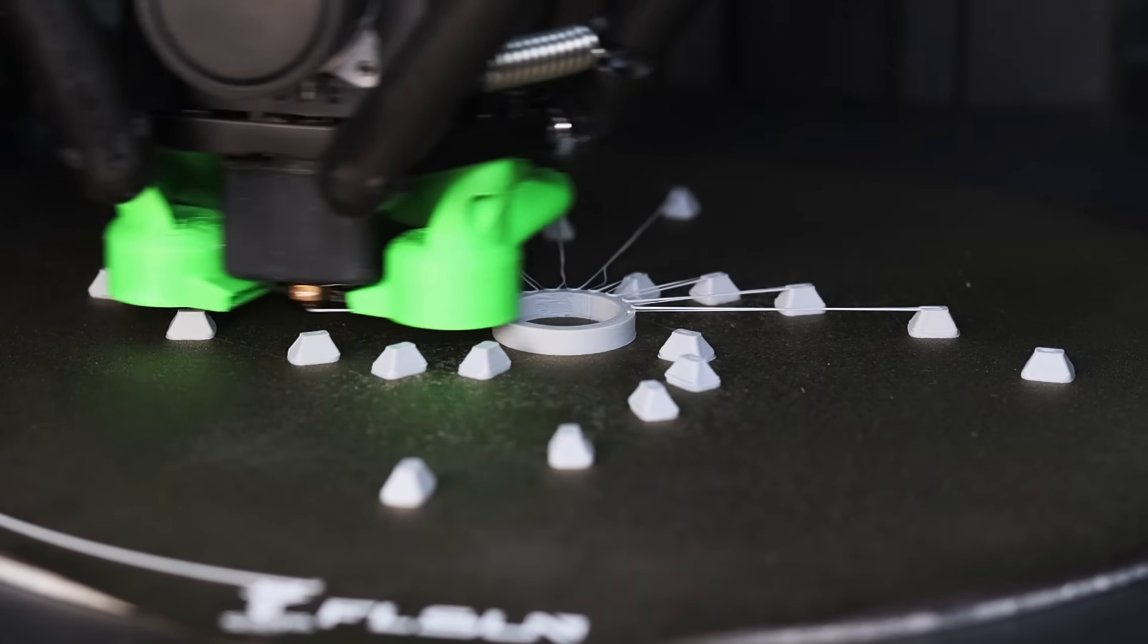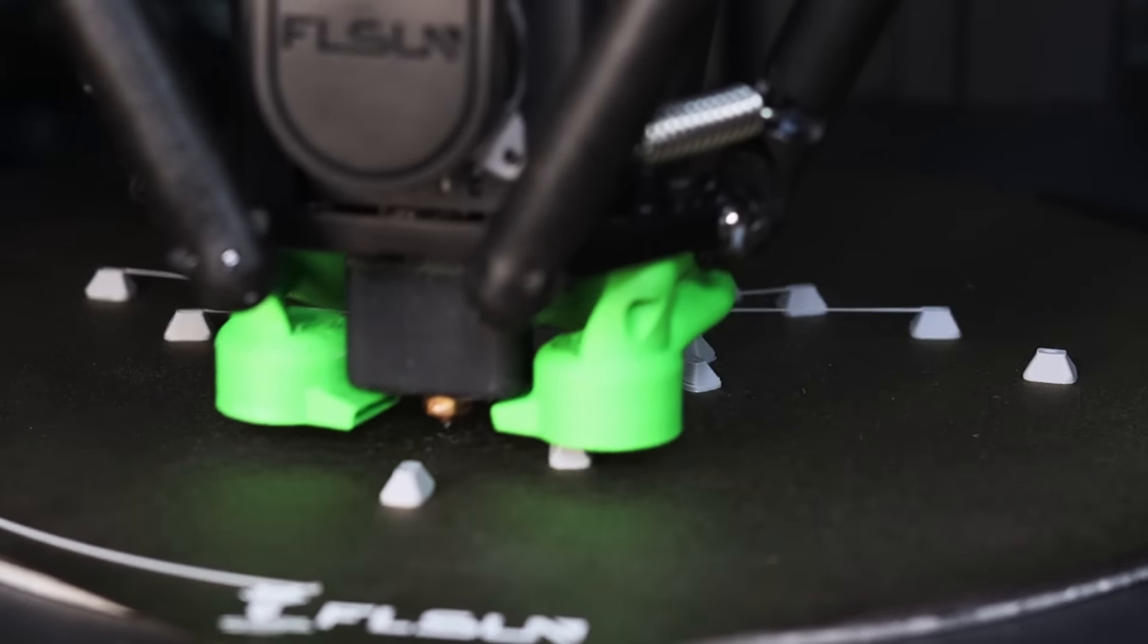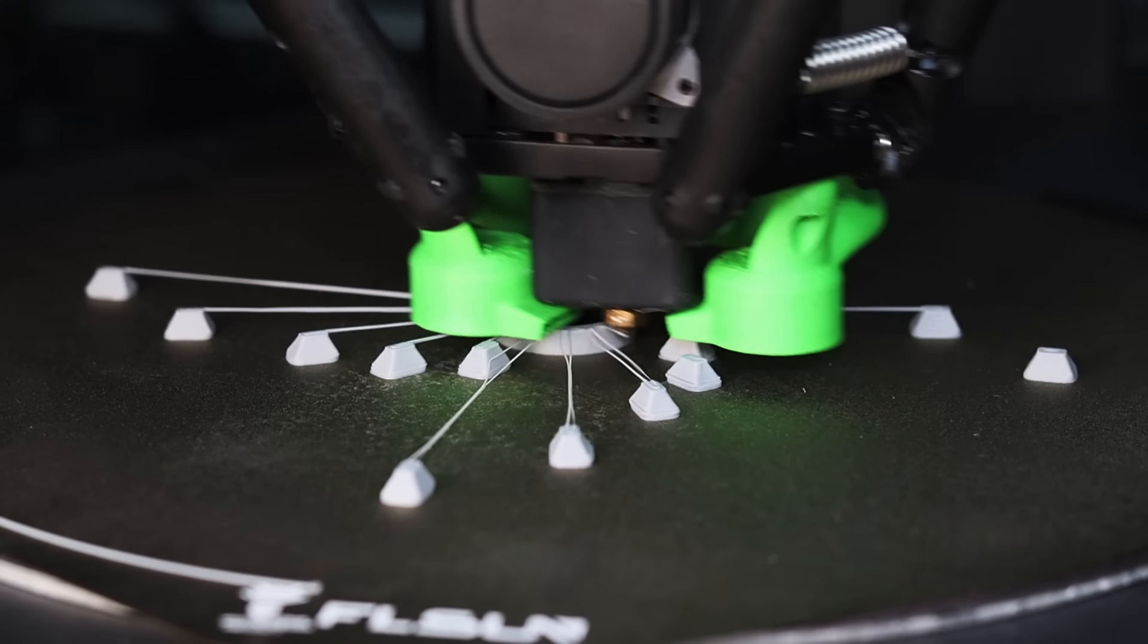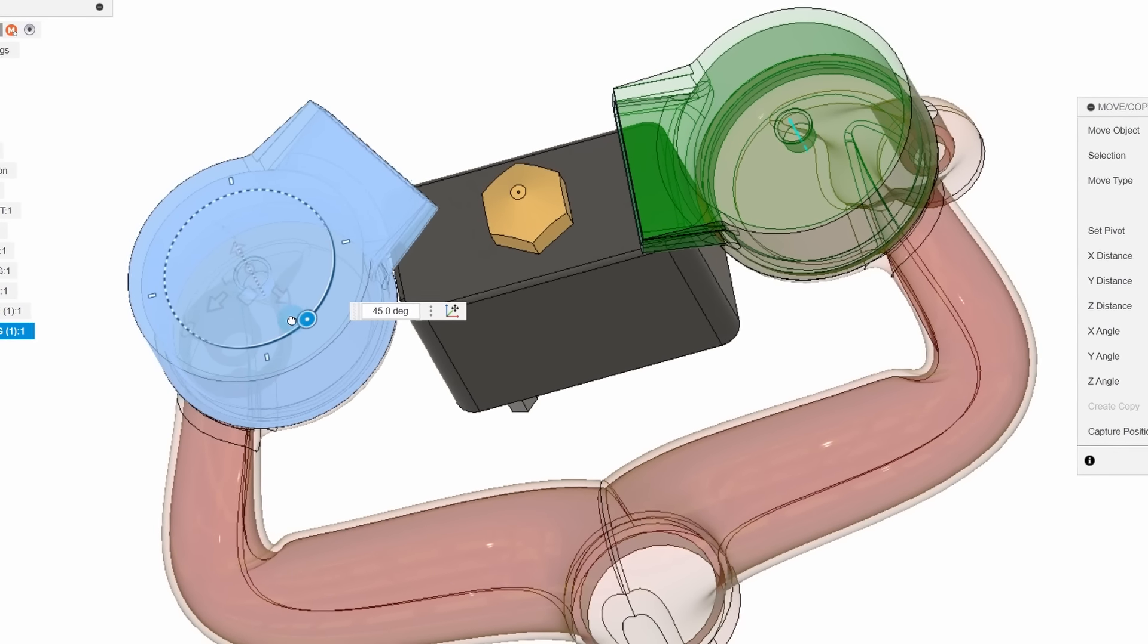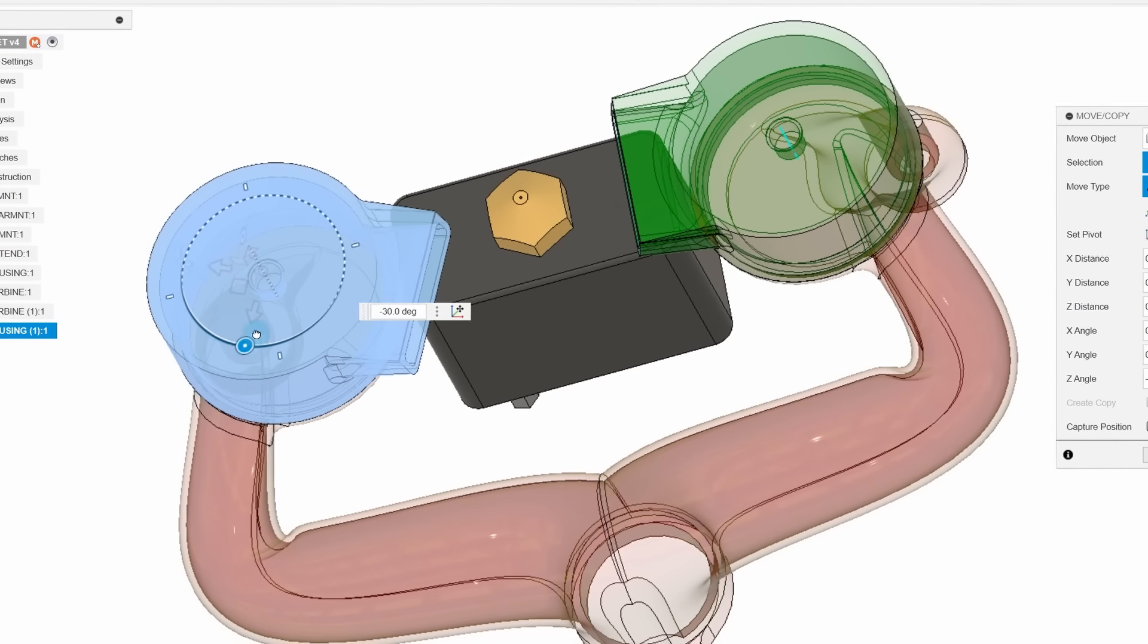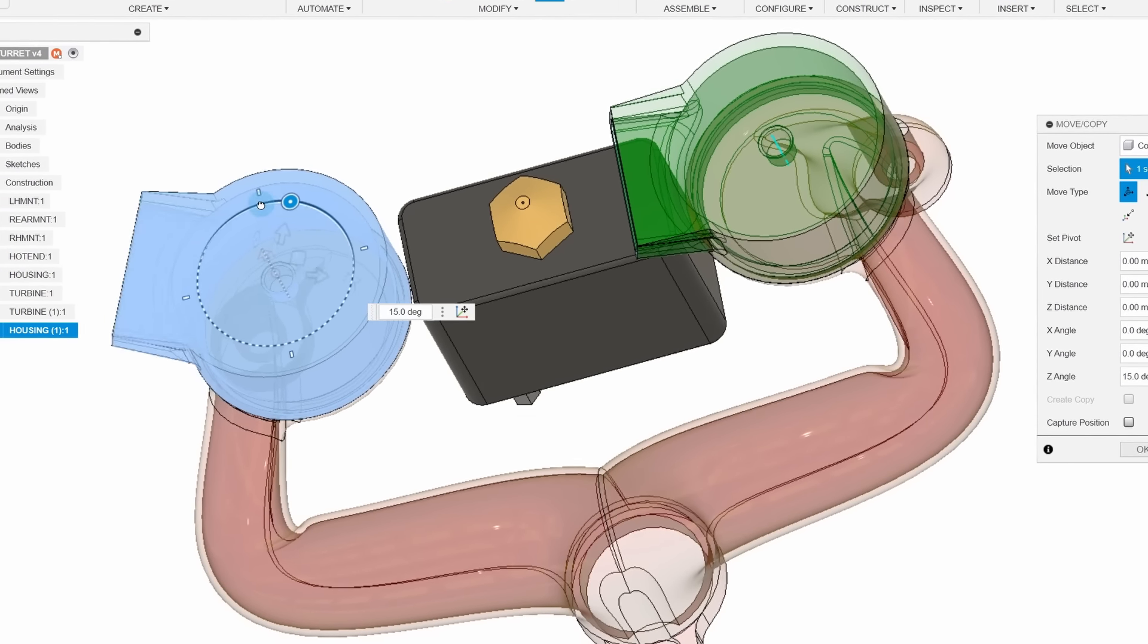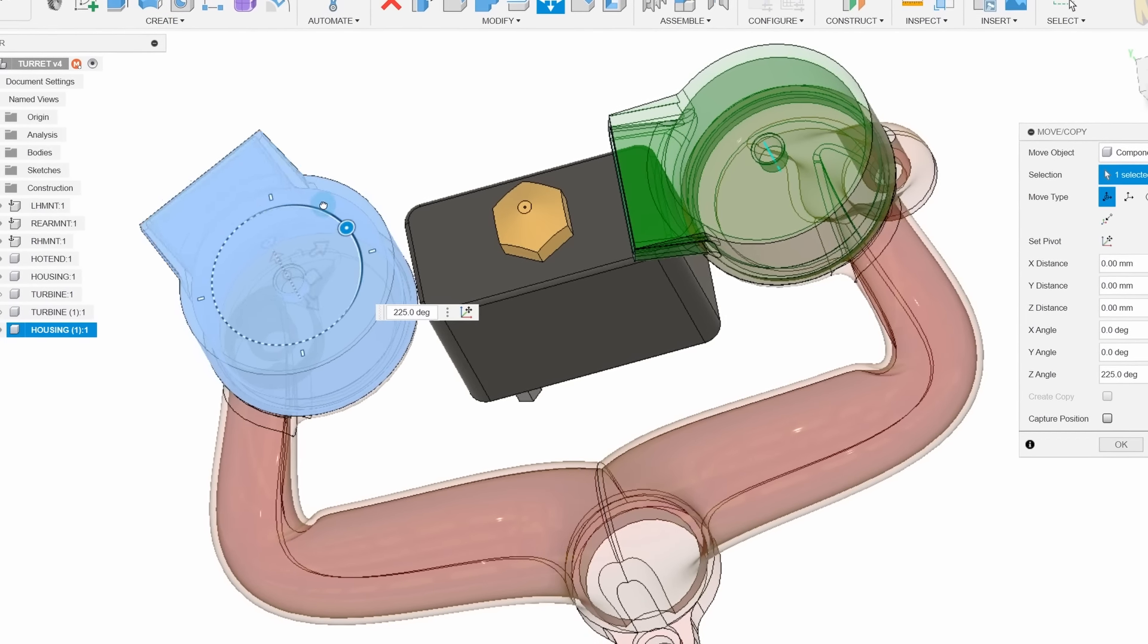This duct did much better than I expected. I thought it would be really restrictive and it would also create too much of a vortex type of effect. The long-term idea with this concept is that it's meant to be modular. The turrets can either be rotated or they can be replaced to best suit the type of print that we're making.